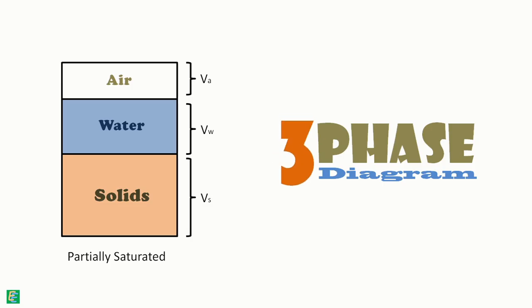When all the voids are filled with water, the soil becomes saturated and the gaseous phase becomes absent from the diagram. Now this diagram contains only two phases: solids and water. It is called a two-phase diagram.